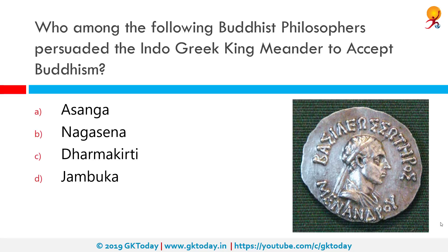Who among the following Buddhist philosophers persuaded the Indo-Greek king Meander to accept Buddhism? That would be Nagasena. According to tradition, Meander embraced the Buddhist faith as described in the Milindapanha, a classical Pali Buddhist text on the discussions between Melinda and the Buddhist sage Nagasena.